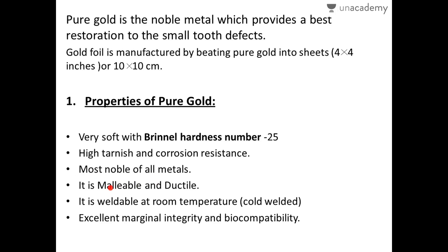Gold is malleable — it can be drawn into sheets. It is ductile — it can be drawn into wires. Most importantly, it is weldable at room temperature, meaning it can be cold welded. This is the most advantageous property of pure gold, as no special environmental conditions are required for welding.